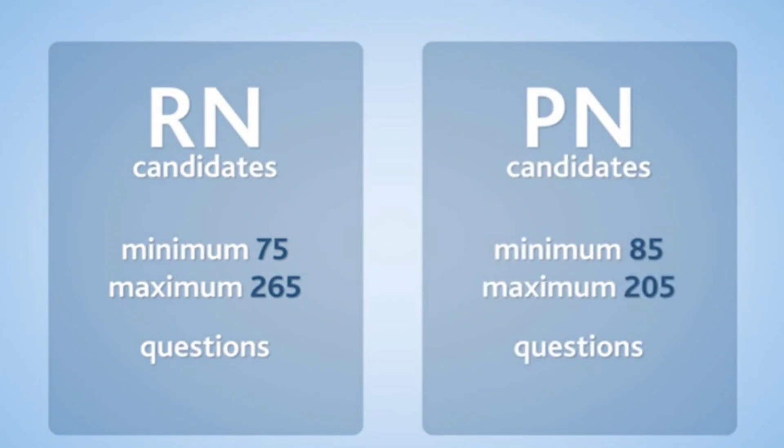The NCLEX exam will consist of 65 to 265 questions. The exam will be finished when the computer has determined your abilities and competence. Questions will continue until the computer's requirements are met and a pass or fail decision is made. Skipping and returning to questions is not allowed. In the first 15 minutes, you will be guided with a 15-question trial version covering every step of the examination, so no prior computer knowledge is required.